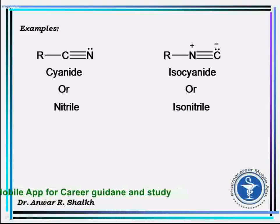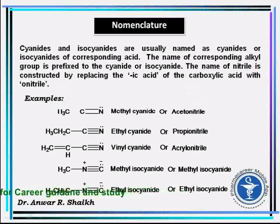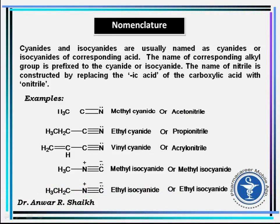These are examples of cyanides and isocyanides. Regarding nomenclature, cyanides and isocyanides are usually named as cyanides and isocyanides of the corresponding acid. The name of the corresponding alkyl group is prefixed to the cyanide or isocyanide. The name of the nitrile is constructed by replacing the '-ic acid' of the carboxylic acid with '-onitrile'. For example, methyl cyanide or acetonitrile, ethyl cyanide or propionitrile.